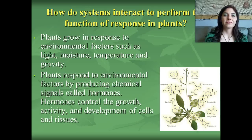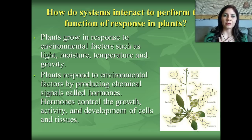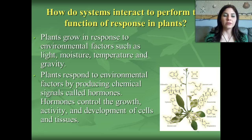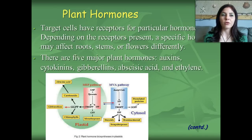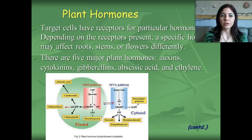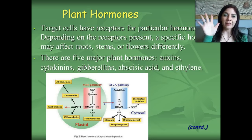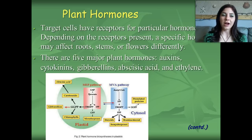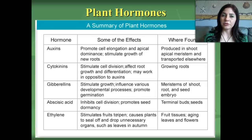Now that we've talked about plant reproduction, let's look at how systems interact for the function of response in plants. Just like we have hormones, plants have hormones as well, and just like we respond to light, heat, cold, gravity, and moisture, so do plants. Target cells have receptors for particular hormones, and depending on what receptor is present, a specific hormone may affect the root, stem, or flower differently. There are five major types of plant hormones: auxins, cytokinins, gibberellins, abscisic acid, and ethylene.